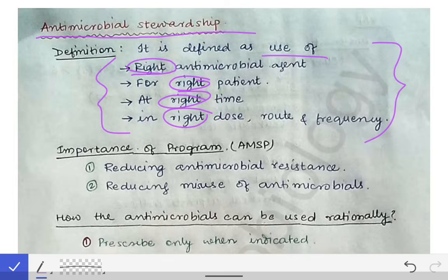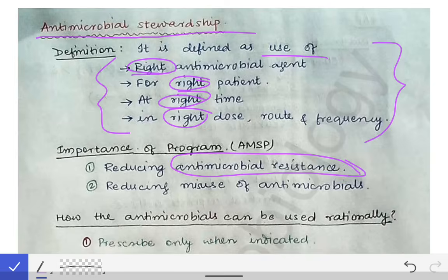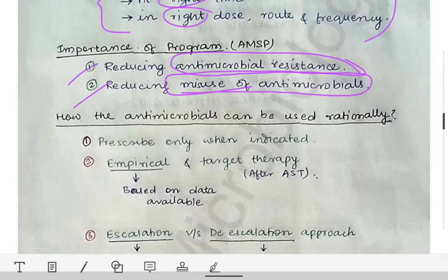The program to ensure the right antimicrobial agent for the right patient at the right time in the right dose, route, and frequency is called the Antimicrobial Stewardship Program. Since this is a microbiology class and not PSM, we will restrict ourselves to the importance of the program. The importance of the AMSP is that it reduces antimicrobial resistance and reduces the misuse of antimicrobials.